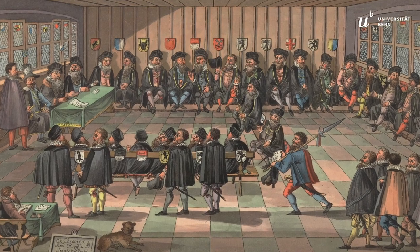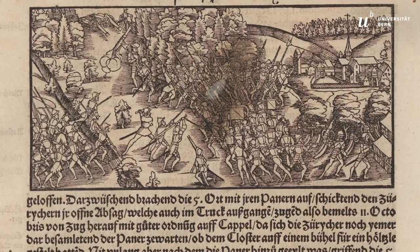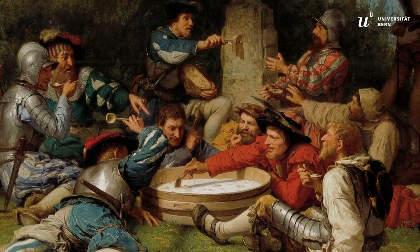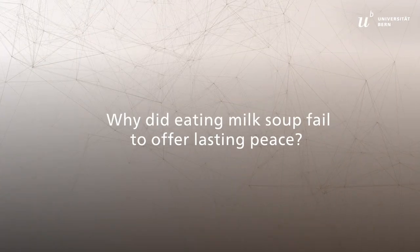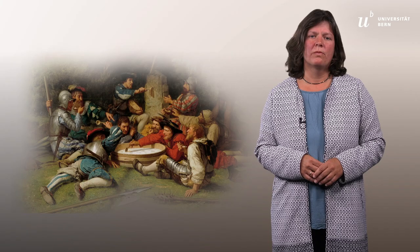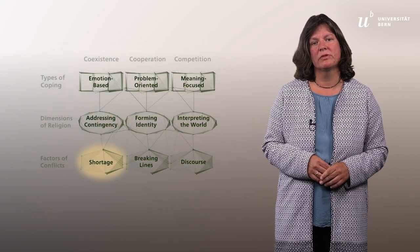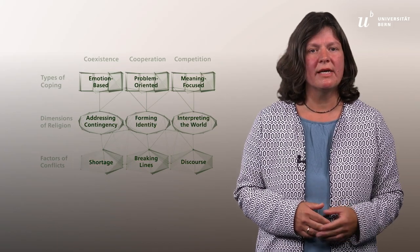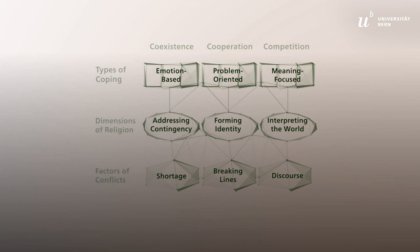The first peace of Kappel did not put an end to the disputes as the cantonal authorities continued to renegotiate the border situation. The ensuing tensions led to a violent armed conflict only two years later. But the events of 1529 became a key anecdote and a symbol of Switzerland in the 16th and even more so in the 19th century. Why did eating milk soup fail to offer lasting peace? When the mercenaries decided to eat soup together rather than fight, they chose a very pragmatic response to a concrete shortage — namely the shortage of food and the resulting need they shared in common. For a short time, they elevated their shared need for food above the divisive line of religious affiliation.